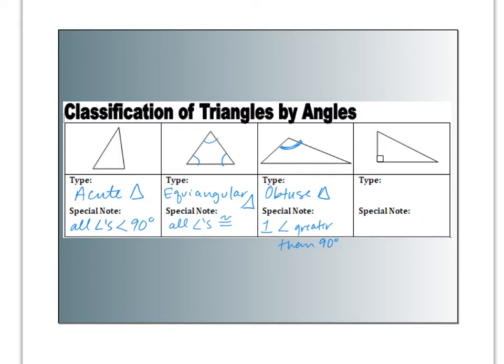The last triangle is a right triangle, and it has one 90-degree angle. Could it have two? The answer is no. If you try to make two 90-degree angles, there's no way those two sides could lean in and make a triangle — they would go straight up and be parallel to each other. So you can only have one right angle in a right triangle.